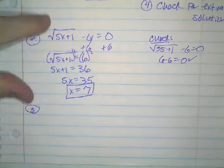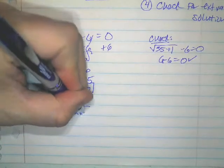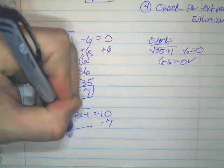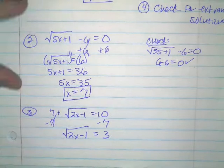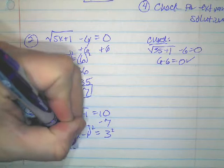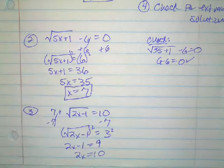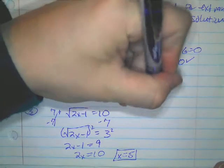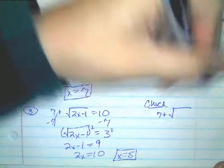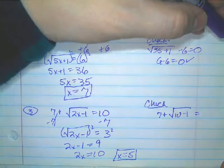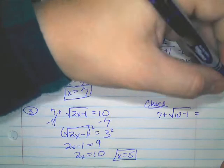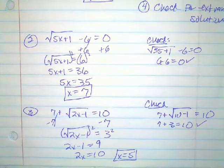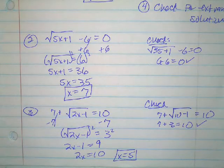How about this one: 7 plus the square root of 2x minus 1 equals 10. Subtract 7 from both sides to get the square root of 2x minus 1 equals 3. Square both sides to get 2x minus 1 equals 9, so 2x equals 10 and x equals 5. Checking with x equals 5: 7 plus the square root of 10 minus 1 equals 7 plus 3, which equals 10. That works out, so x equals 5 is the solution. If you see a radical, get it by itself and then square both sides to undo it.